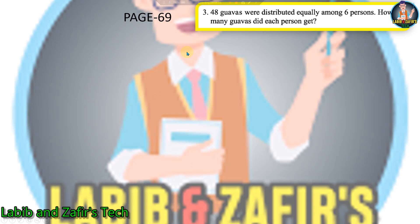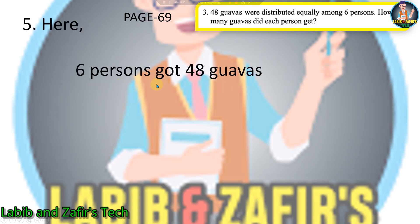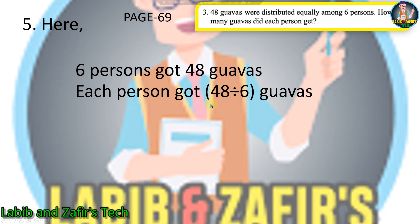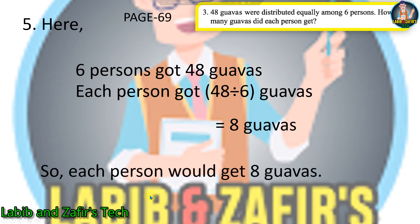Our fifth word problem is also from page 69: 48 guavas were distributed equally among six persons — how many guavas did each person get? Six persons got 48 guavas, so each person got 48 divided by 6. Dividing 48 by 6 gives 8, so each person would get 8 guavas.